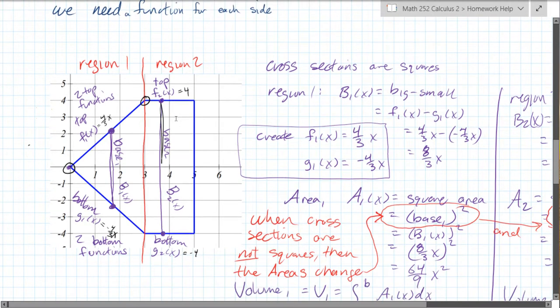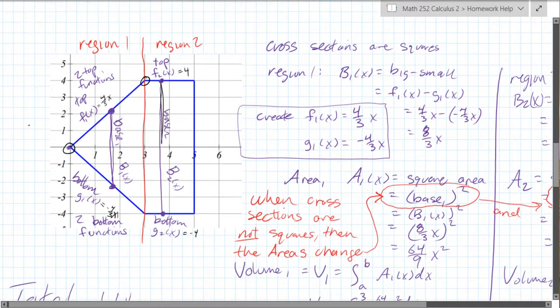Okay, so now we're ready to write down the area of a cross section. So we know our cross sections are squares. So we have, we'll do region one first.